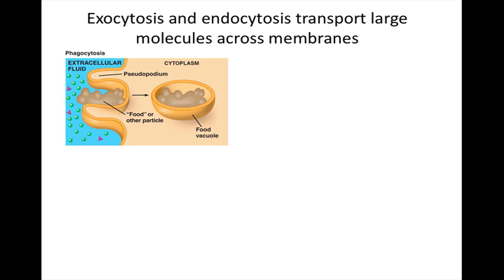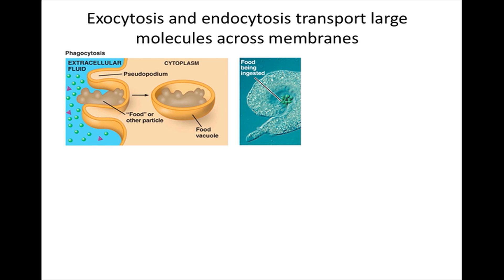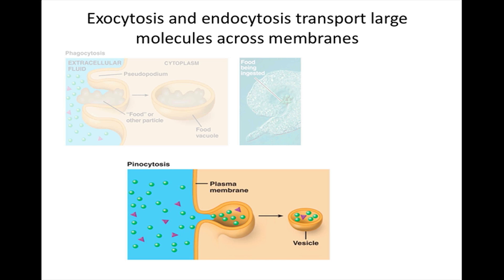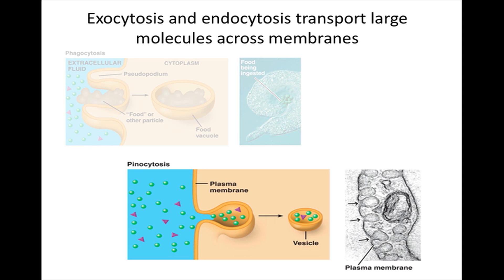Phagocytosis, or cellular eating: a cell engulfs a particle by wrapping extensions called pseudopodia around it and packaging it within a cell membrane-enclosed sac large enough to be called a vacuole. Here is a live picture of a cell performing phagocytosis. Pinocytosis, or cellular drinking: the cell gulps droplets of fluid into tiny vesicles. Pinocytosis is not specific — it takes in any and all solutes dissolved in the droplets. Here we see a picture of a cell performing pinocytosis.